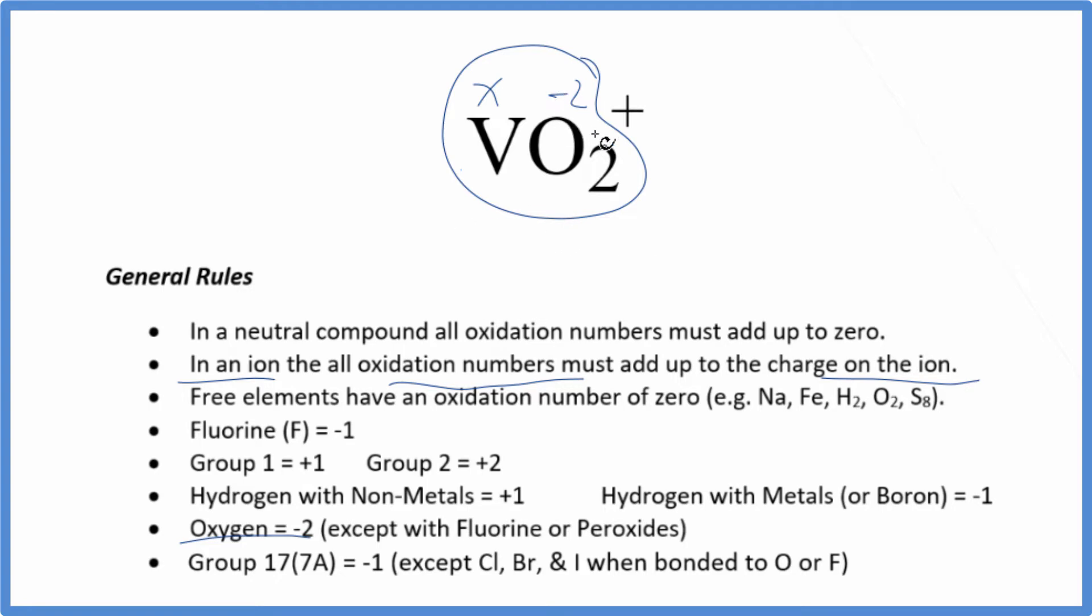Let's just set an equation up. We could say X plus two times minus two, minus four, equals plus one. We add four to both sides and we get X equals a positive five. So the oxidation number on the vanadium here is plus five.